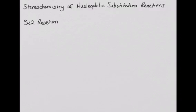If we use the chiral substrate R-2-bromobutane and react it with a hydroxide nucleophile, we will get a single stereochemical product, the S isomer of 2-butanol.